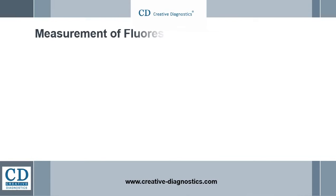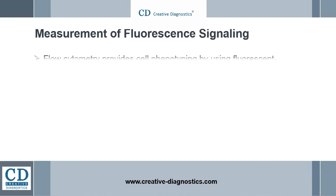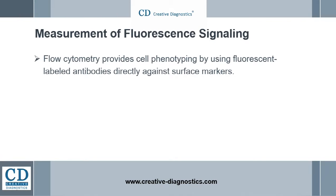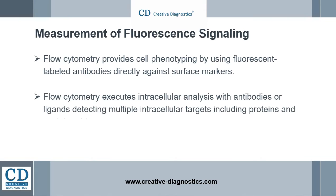In addition to identifying the size and granularity of cells, flow cytometry provides cell phenotyping by using fluorescent-labeled antibodies directly against surface markers. Simultaneously, flow cytometry executes intracellular analysis with antibodies or ligands detecting multiple intracellular targets, including proteins and nucleic acids.